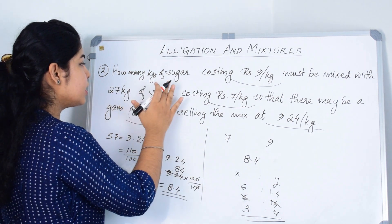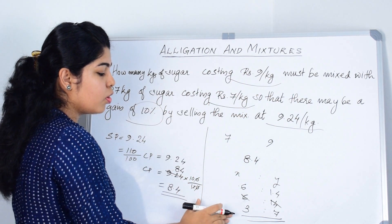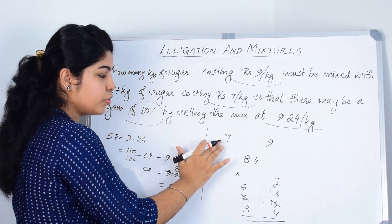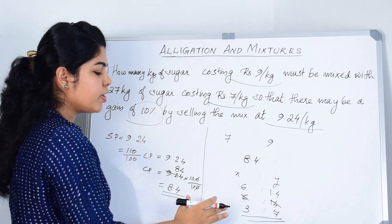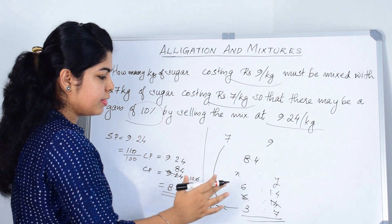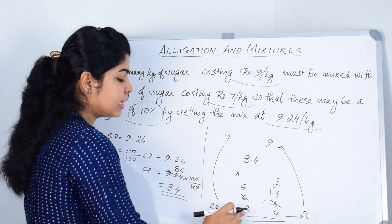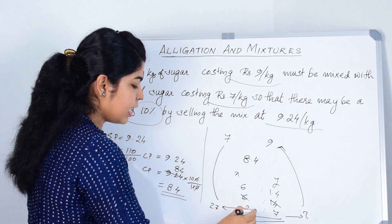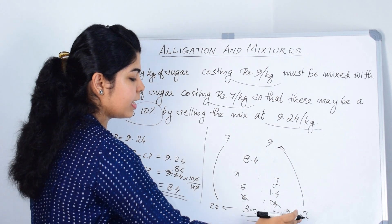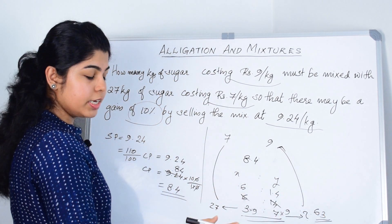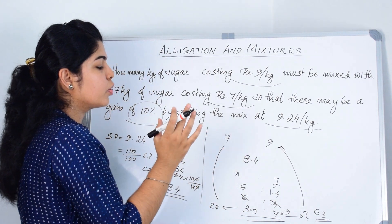Our question asks how many kilograms of sugar costing Rs. 9 per kg must be mixed with 27 kilograms of sugar costing Rs. 7 per kg. The ratio is 3 is to 7: for every 3 kg of the Rs. 7 sugar, we need 7 kg of the Rs. 9 sugar. To make this 27, 3 is multiplied by 9. So we do the same with 7: 7 multiplied by 9 equals 63. We need 63 kilograms of sugar costing Rs. 9 per kg.